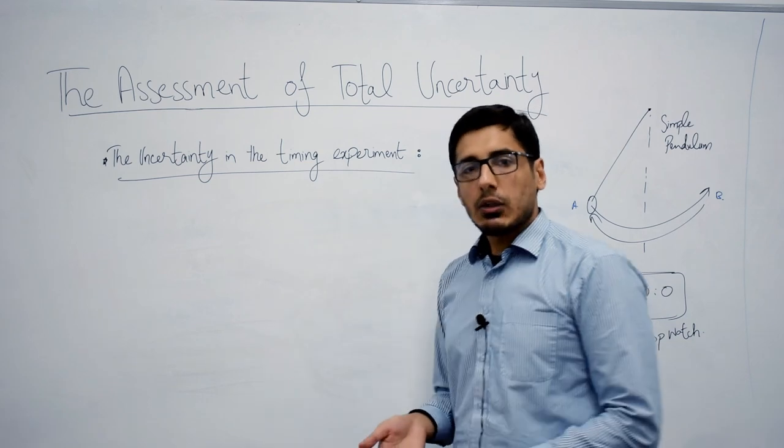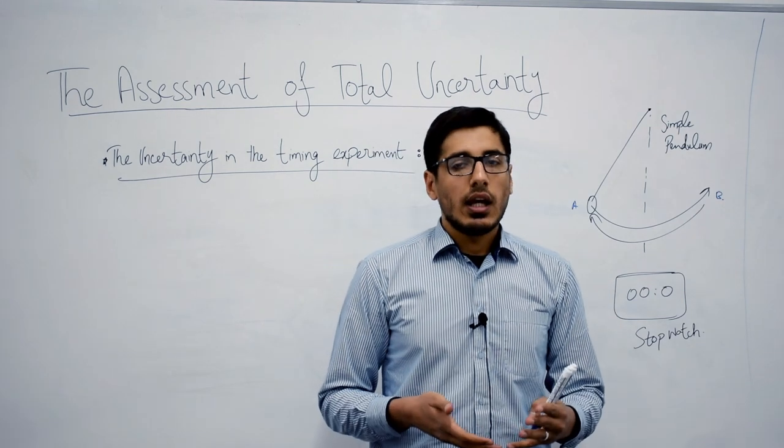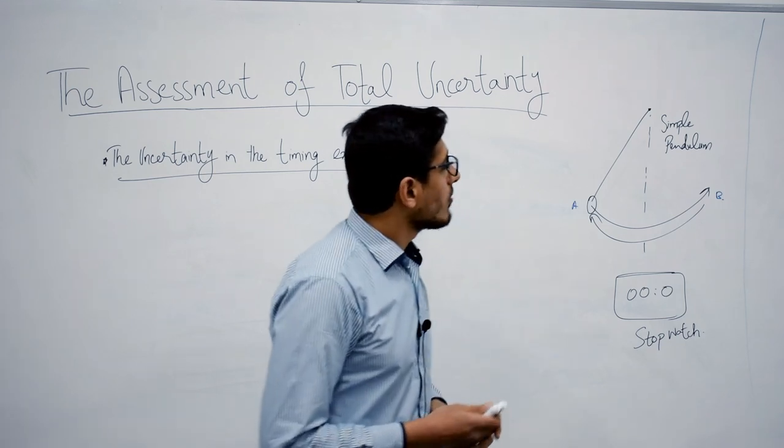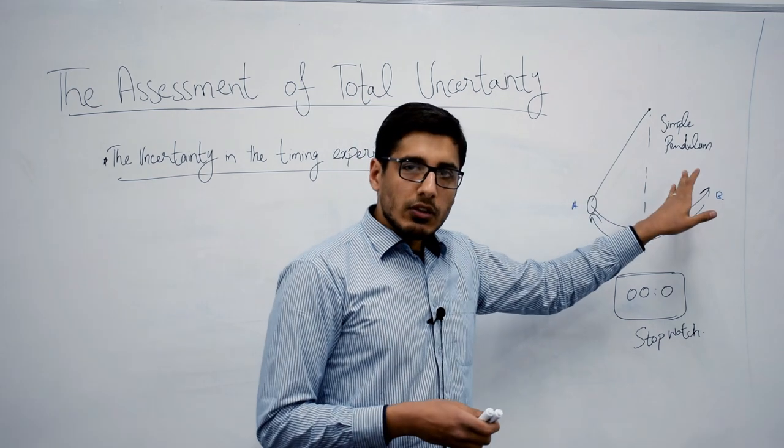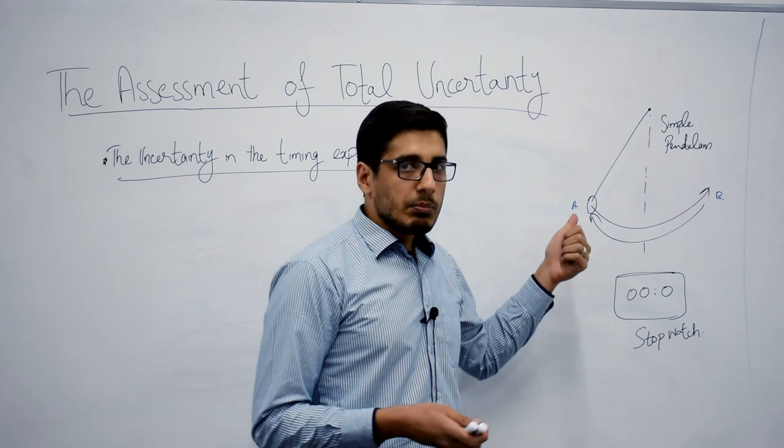Before digging into calculating the uncertainty, let's look at an example of a timing experiment. Here we have a simple pendulum, which is a vibrating body, and you need to calculate the time period of this simple pendulum.